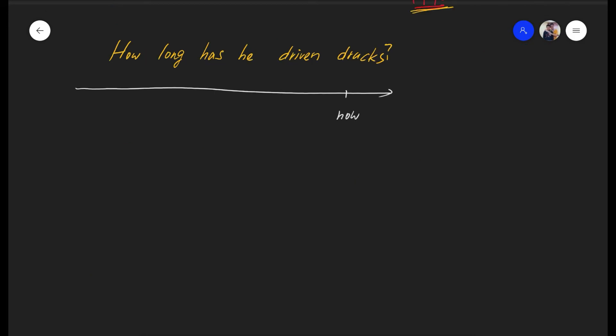Let's take a look at this one. If somebody asks, how long has he driven trucks? You see has with a verb past participle. This is from the word drive, the past tense will be drove, and finally driven. That's the verb past participle. How do we answer that?